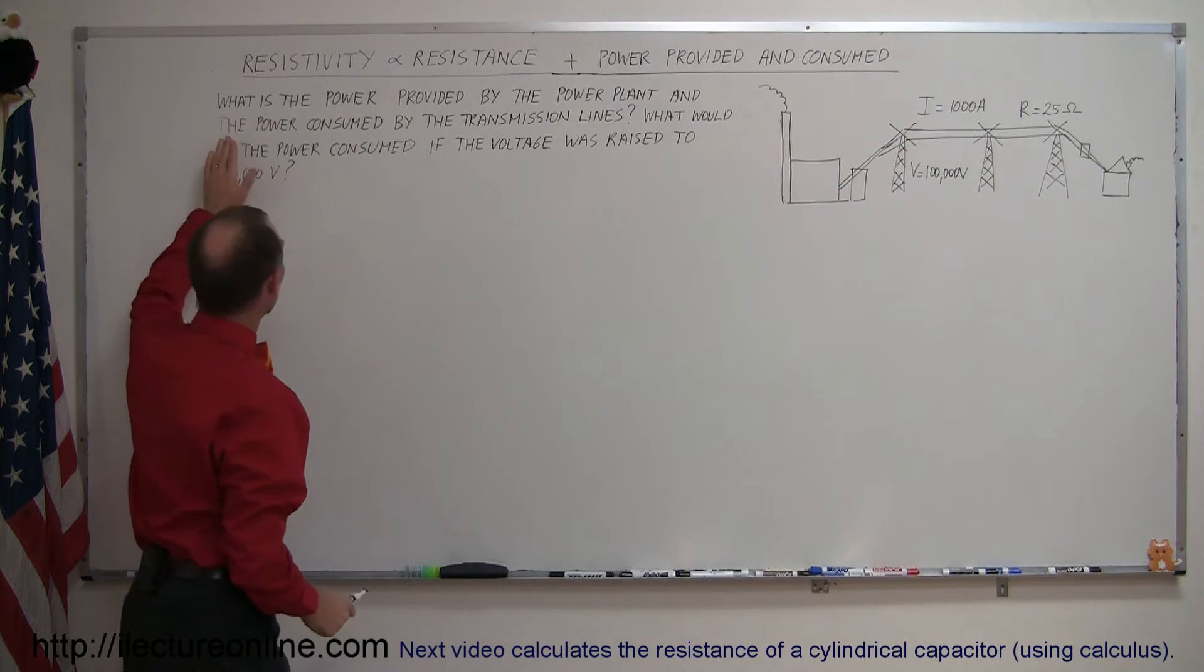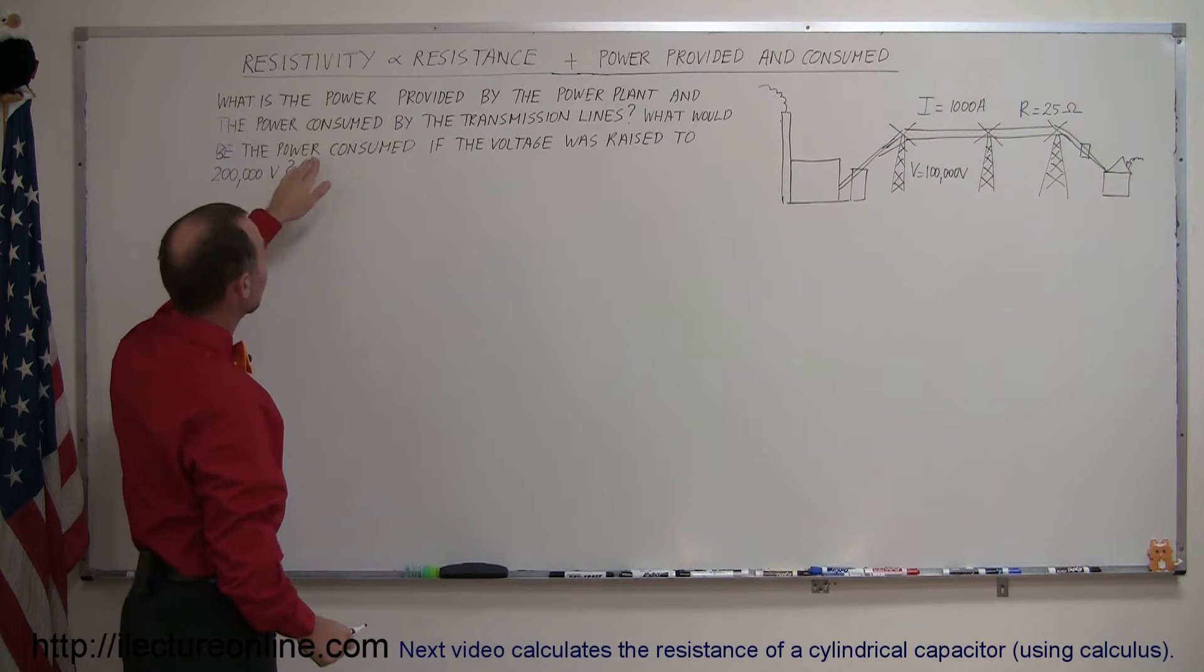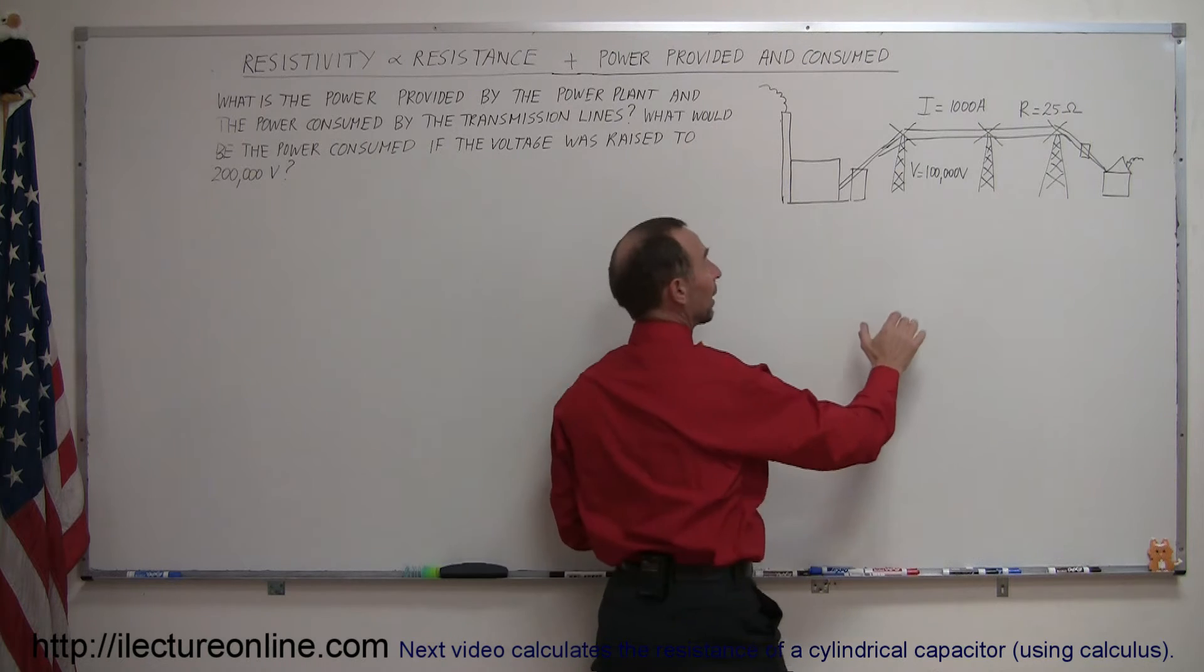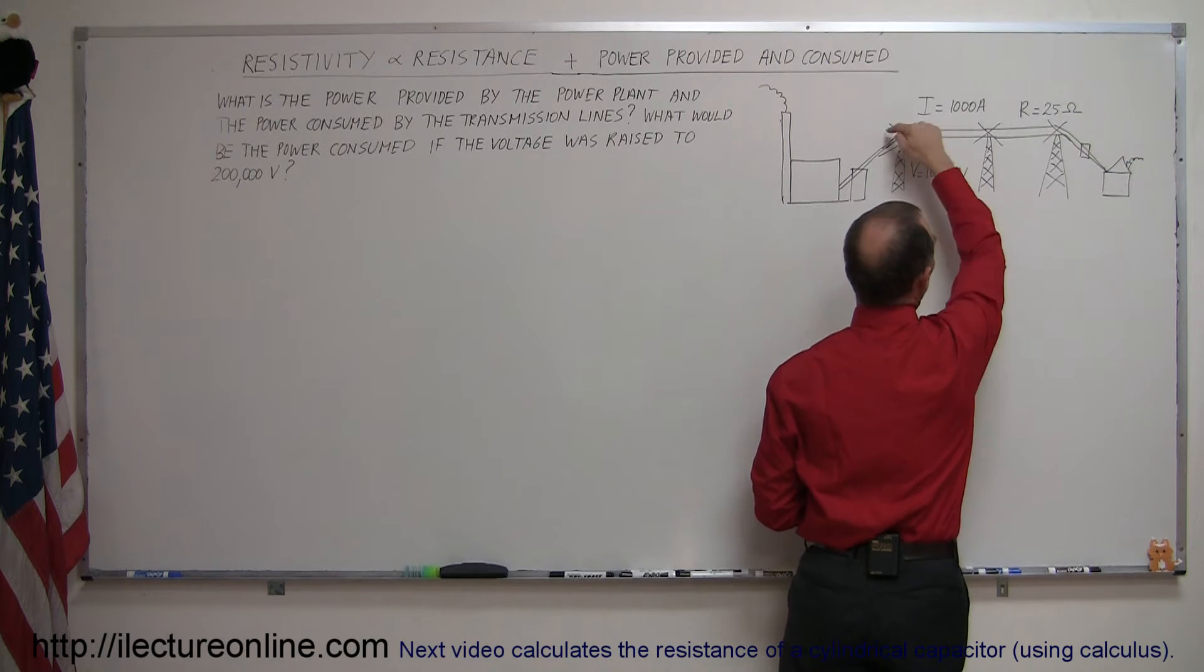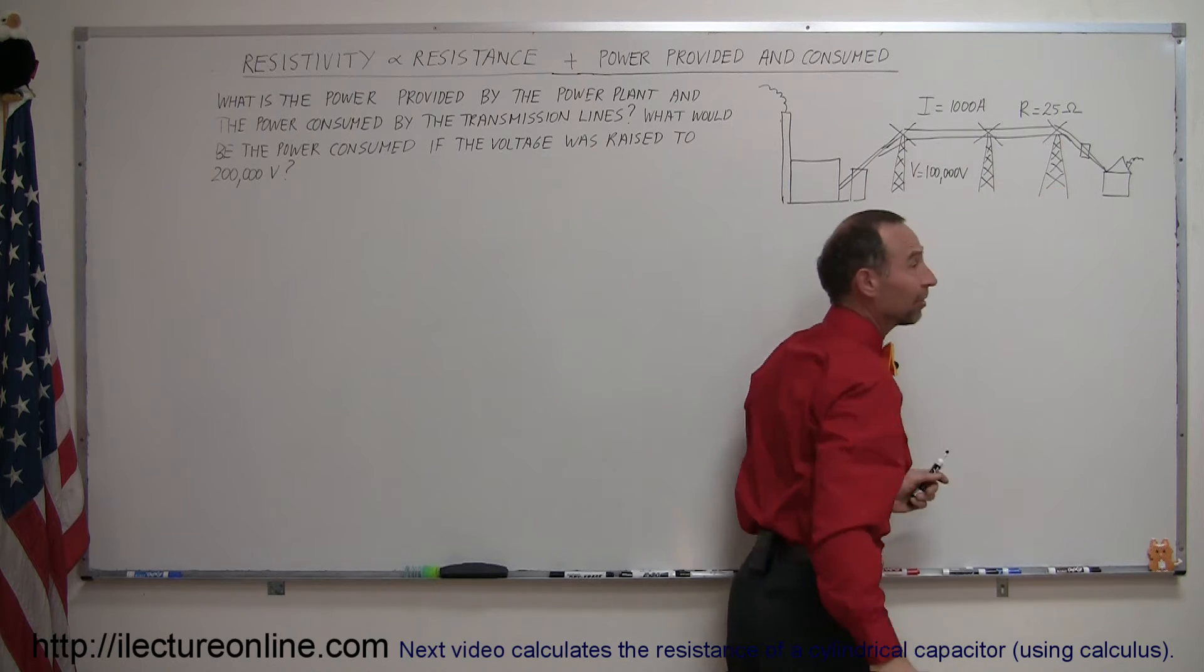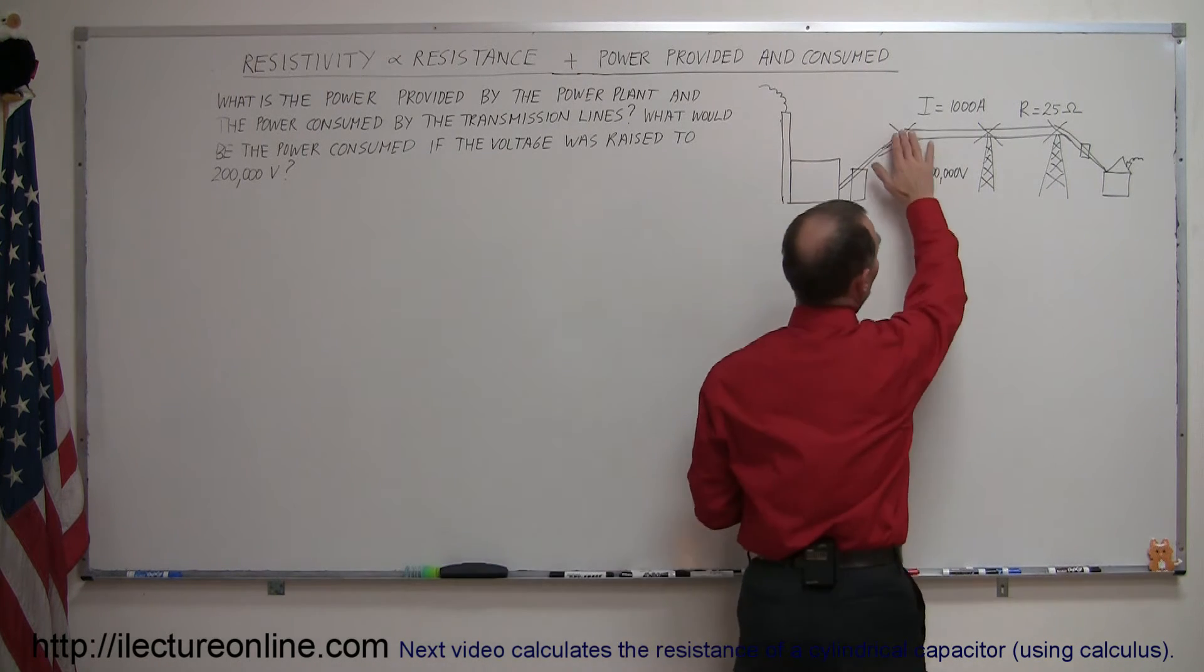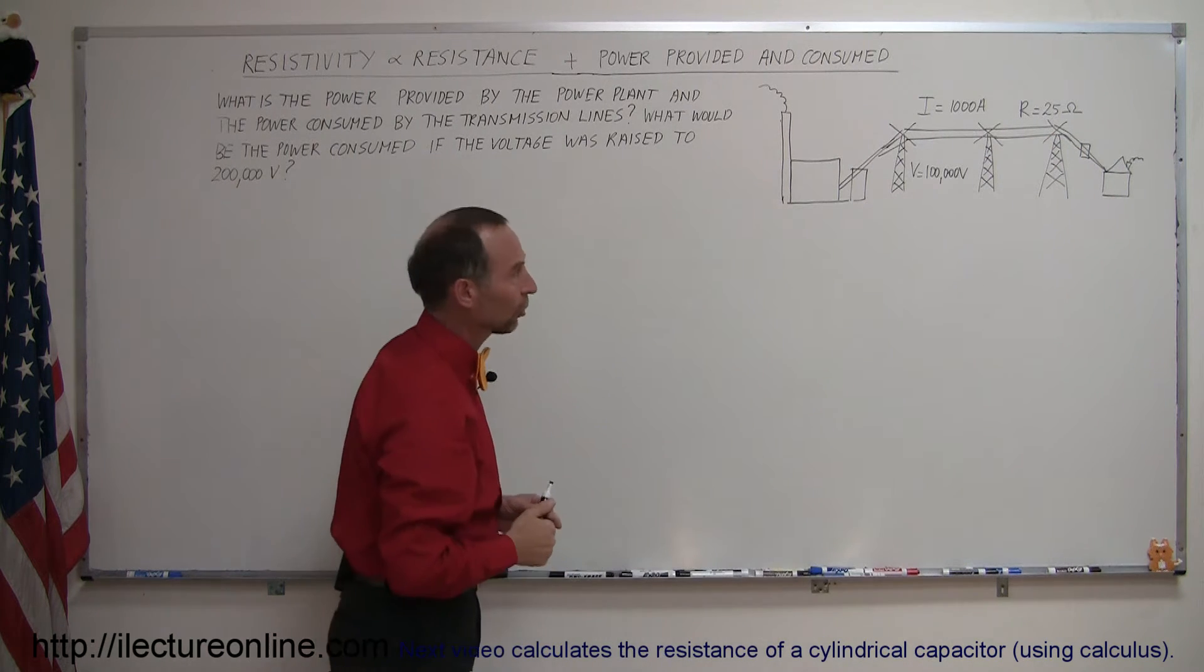Now the question asks what is the power provided by the power plant and the power consumed by the transmission lines? So here not all the power is consumed by the consumers at the end. There's also power loss on the transmission lines, and of course you want to minimize the power loss, otherwise too much money is spent on transmitting the power and not enough actually makes it to where it needs to go.